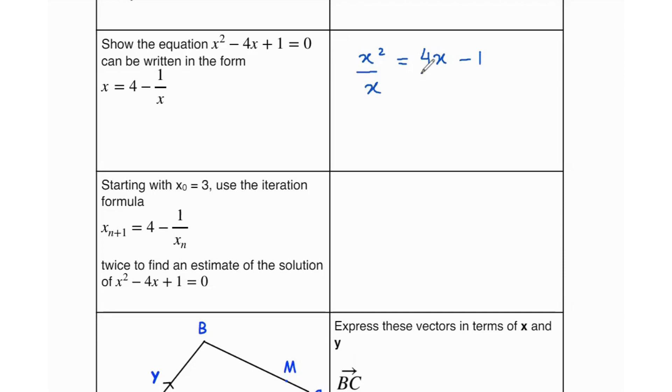Then I'm going to divide each term by x, as you can see x only has a power of 1 here not 2. So that's going to give us x equals 4 minus 1 over x, which is exactly what they want us to write the equation in the form of.